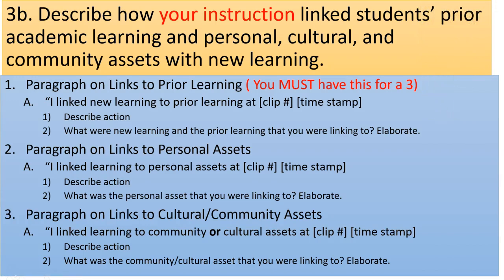Rubric 7 also covers all of 3a and 3b. For 3b, you want to describe how your instruction linked students' prior academic learning and personal, cultural, and community assets with new learning. You must have a paragraph on links to prior learning — this is not optional. This is the level for proficiency. Simply say: 'I linked new learning to prior learning at clip number [X] at timestamp [Y],' describe the action, and then explain what the new learning was and what the prior learning was that you were linking to — some elaboration is needed.